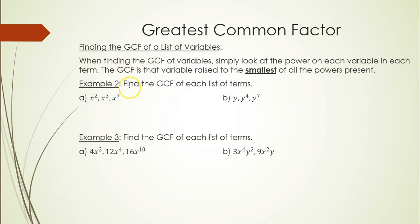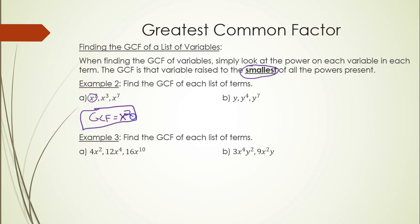When dealing with a list of variables, the variable must be present in every term, and we pick that variable raised to the smallest power present. In example 2 part a, x is in every term and the smallest power is 2, so the GCF is x squared. In part b, y is in every term with the smallest power of 1, so the GCF is y.